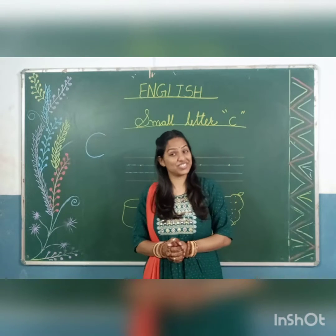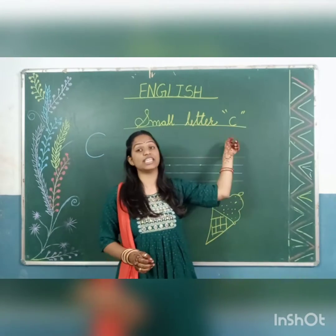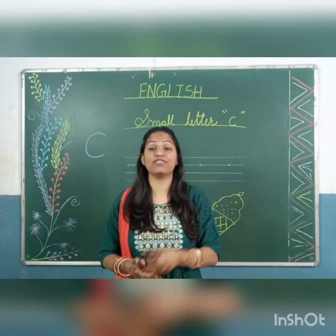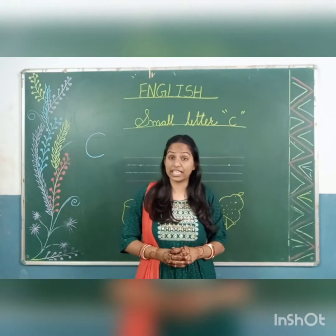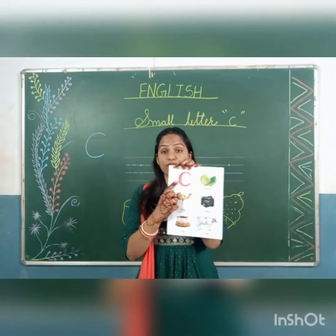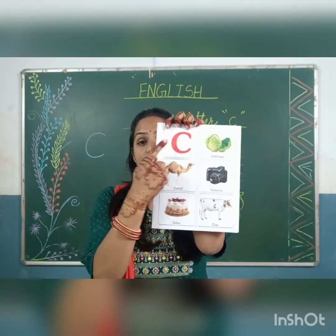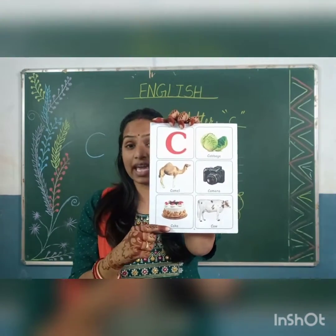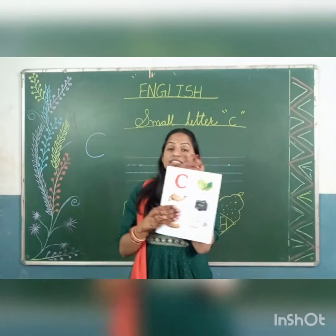Good morning kids, today our subject is English and we will learn about small letter C. C for cat, C for cake, C for camel, C for cabbage, C for camera, C for cow. These are the objects that start with the letter C.